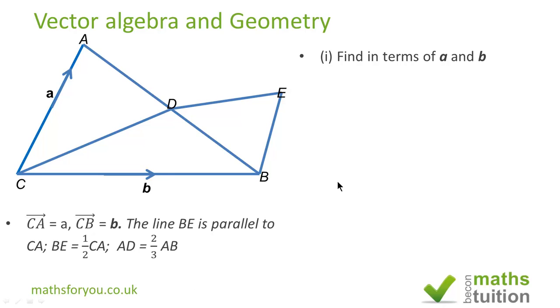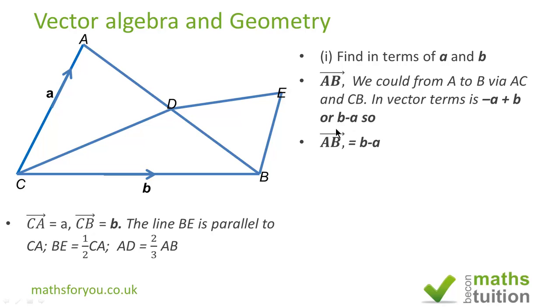Now there are two parts to this question here and the first part says find in terms of a and b the vectors. AB is the first one so we could go from A to B via C, so we'll do A to C and then C to B. Because we're going against the grain from A to C, A to C is now minus a and then C to B is plus b, and rearranging that becomes Vector AB is now b minus a.